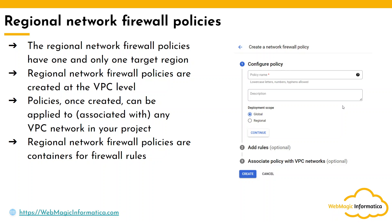Next is the regional network firewall policy. This is also created at the project node and can have multiple rules within it depending on your requirement. Whereas the global firewall policy gets associated to all subnets across the globe, this one gets associated to the region you select. For example, if you choose us-central1, all the VPCs and subnets in that region will get the rule applied. You do need to explicitly associate the network — it doesn't get applied automatically just by creating the policy.